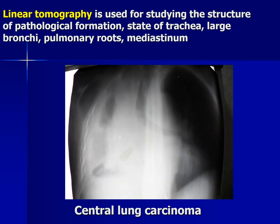Linear tomography is used for studying the structure of a pathological formation, state of trachea, large bronchi, lung roots, and mediastinum. Here is the image of central lung carcinoma. We see a frontal slice of the patient — we see the trachea, its bifurcation, and the left main bronchus is clear. The right main bronchus is blocked by tumour and we see the absence of gas in the right lung.